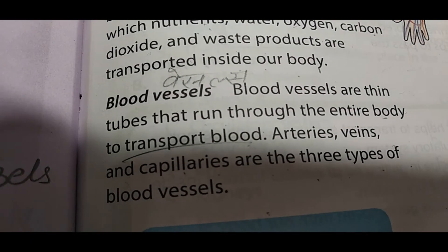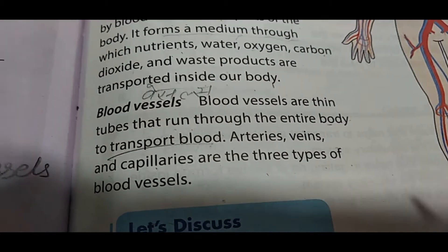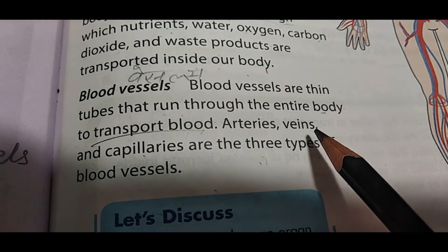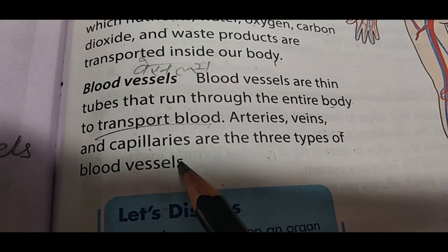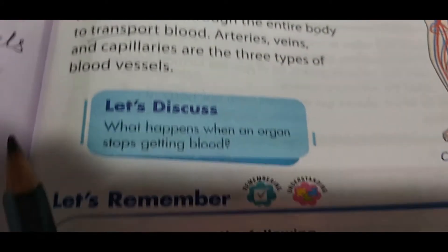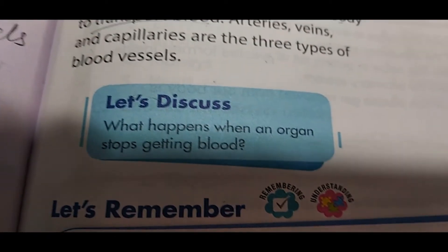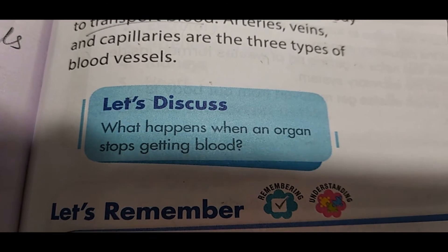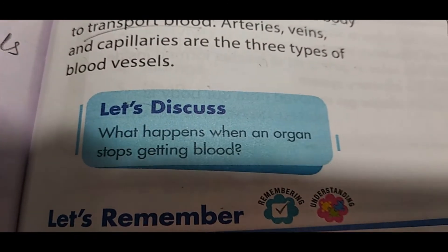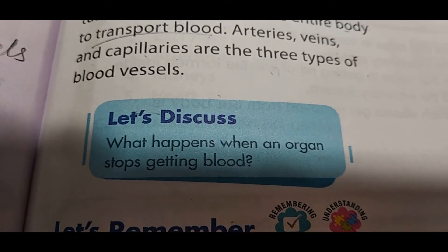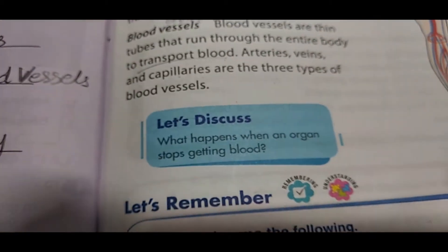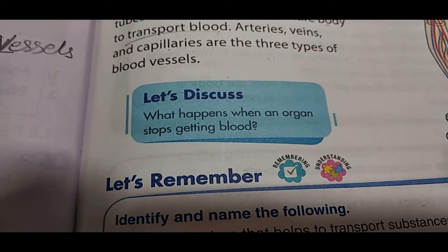The blood vessels are three types: arteries, veins, and capillaries. Now let's discuss what happens when an organ stops getting blood — if any organ stops receiving blood, what will happen?